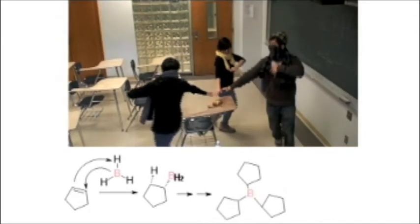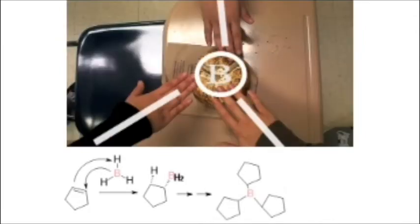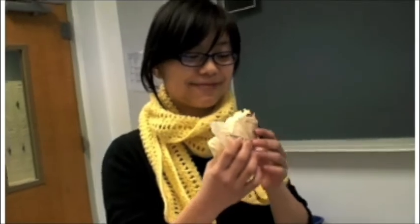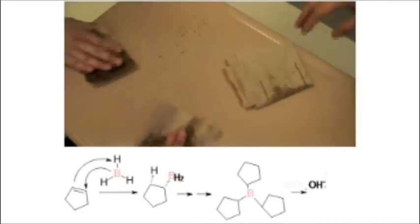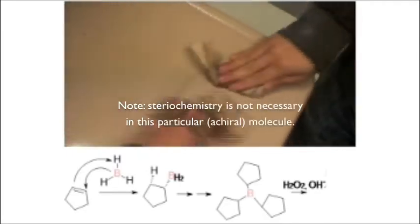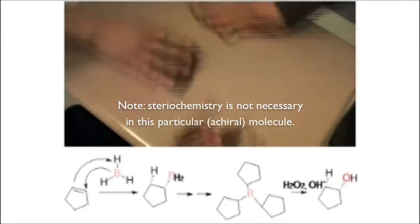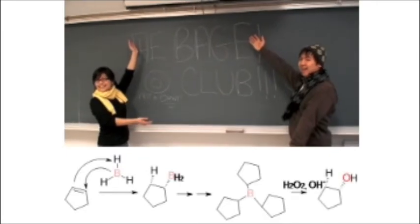Boron is now bonded to three carbons in total. After eating a bagel, of course, you have to clean up your mess — alcohol to the rescue! The only problem is that the bagel had some cream cheese in it, and the cream cheese had some peroxide in it. Oh no! This would mean that this reaction is anti-Markovnikov and that the OH bonds to the less substituted carbon. The end result is a syn-addition of H and OH.